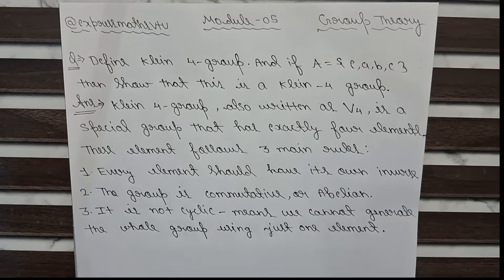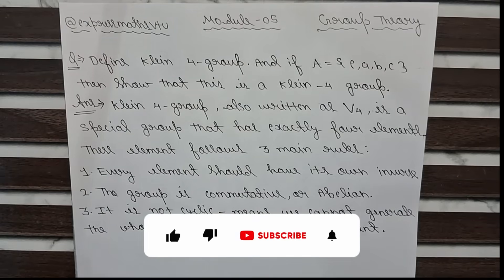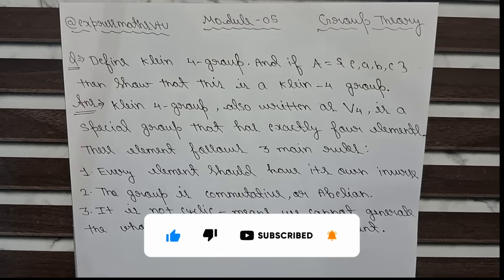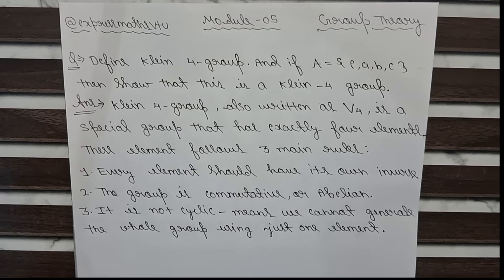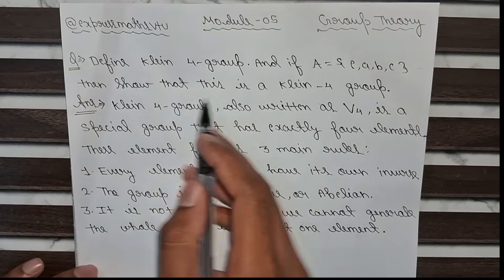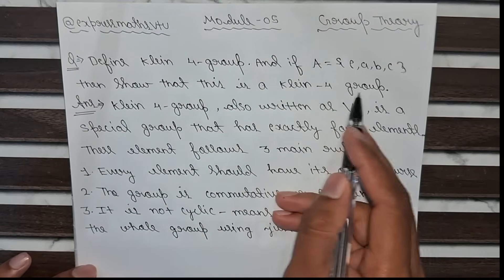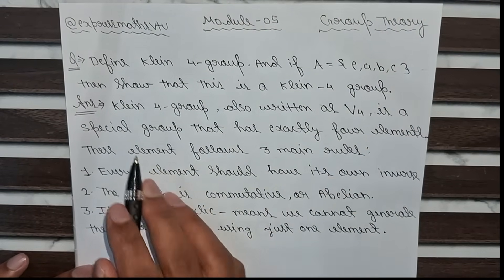Hello everyone, today we are going to solve another important question from module 5, group theory. The question is: define Klein four-group, and if A = {e, a, b, c}, then show that this is a Klein four-group.